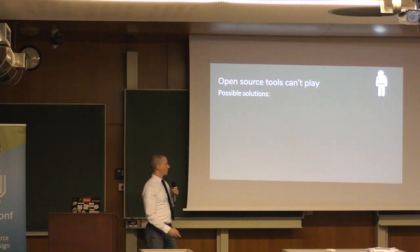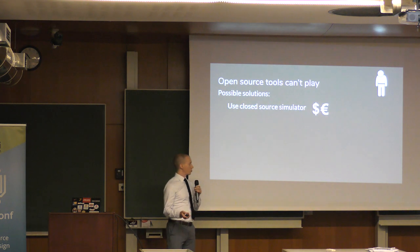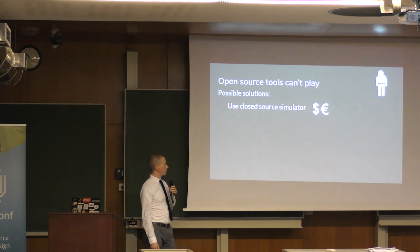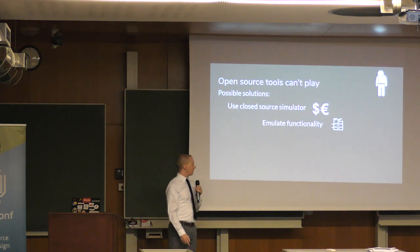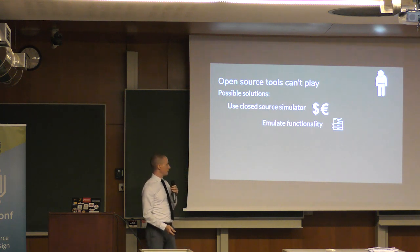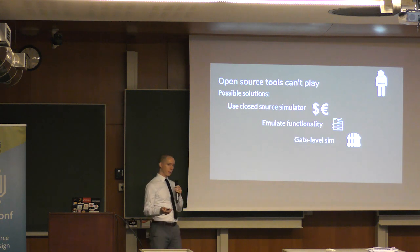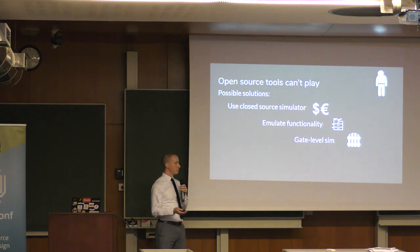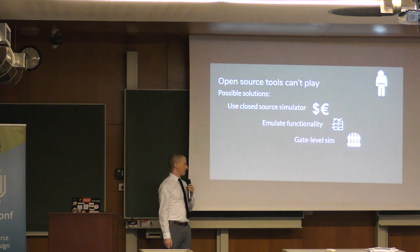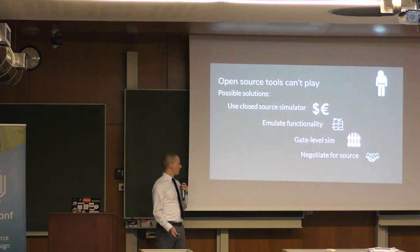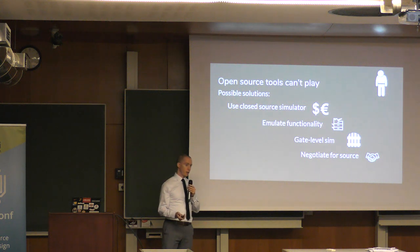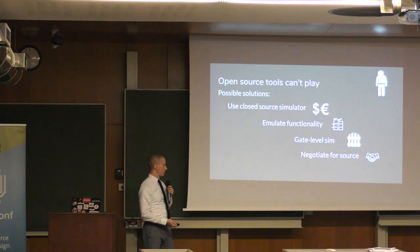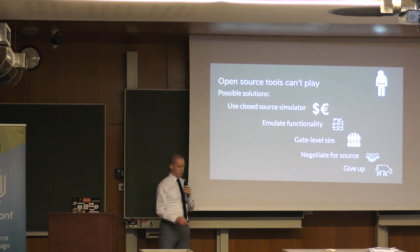You have a few options. You can use closed source tools to simulate these parts of your design, maybe do integration testing outside of Verilator — that's less than ideal. You can write your own behavior model, which seems to kind of defeat the purpose of licensing IP. If you're able to, you can synthesize and emit gates and simulate those gates — again, less than ideal than running the actual RTL. You can try to go to the vendor and get plain text RTL or obfuscated source, but that's a different kind of terrible because it involves lawyers and negotiations. Or you can just give up and become a farmer or something.